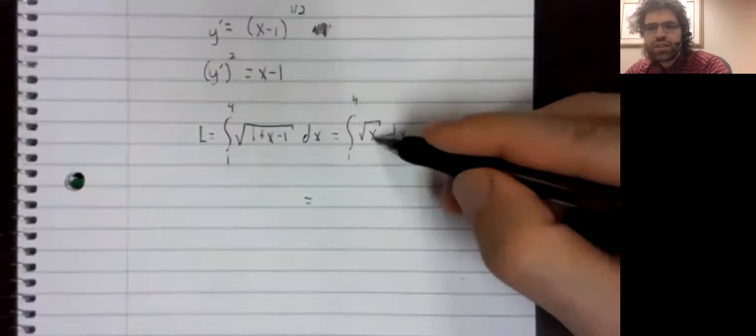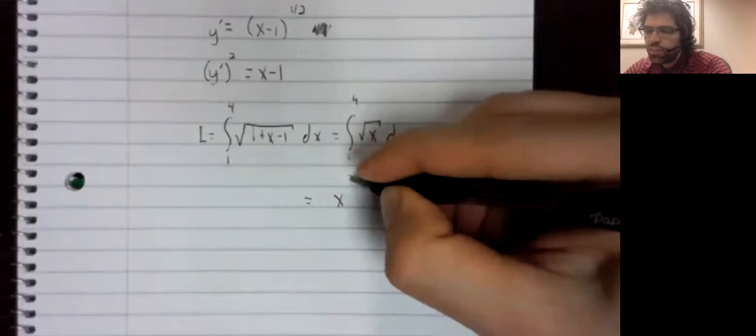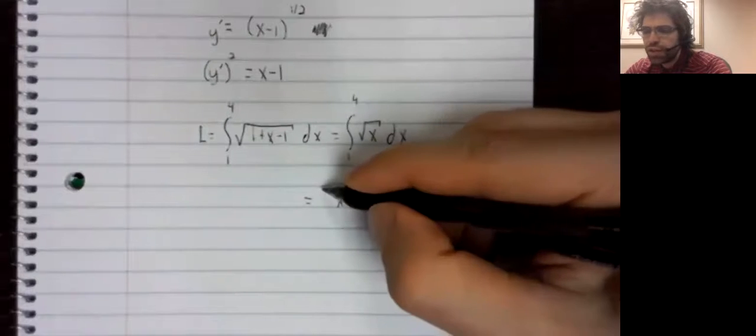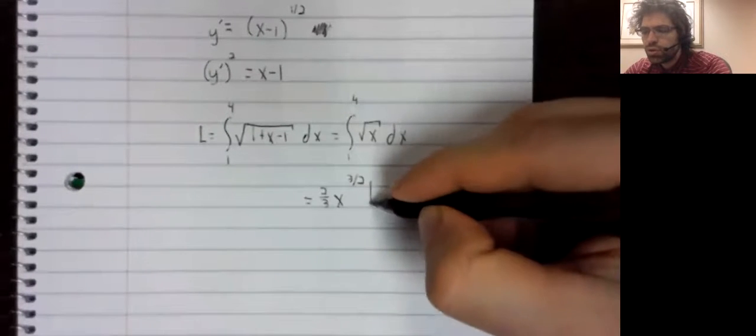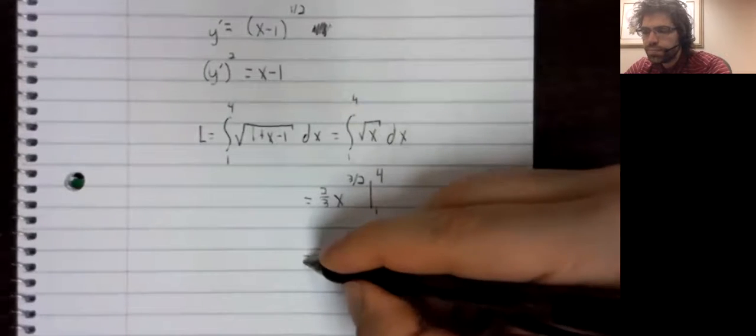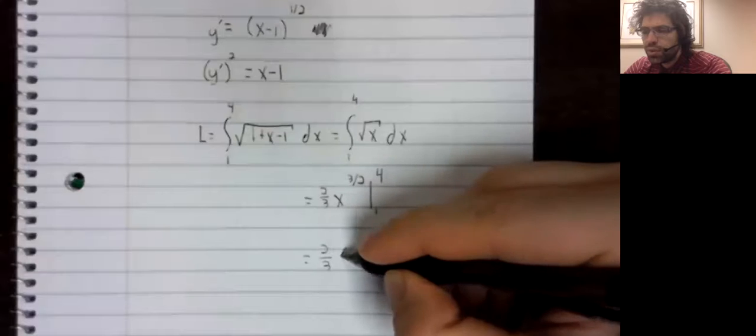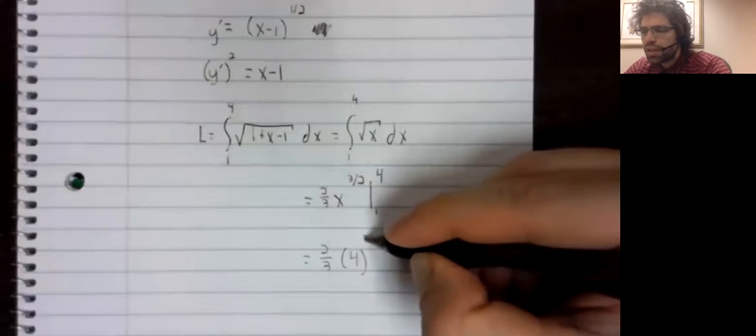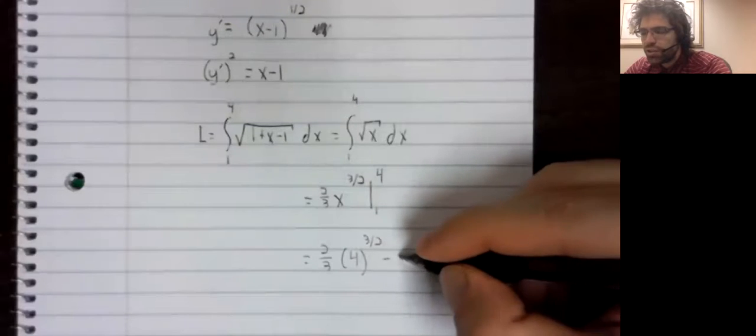So the antiderivative of this, x to the 1 half is bumped up to x to the 3 halves. We put a 2 thirds in front.